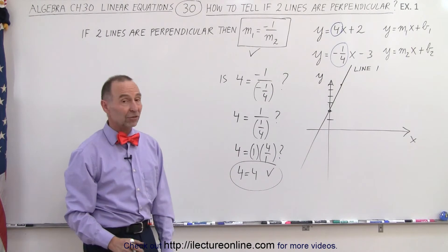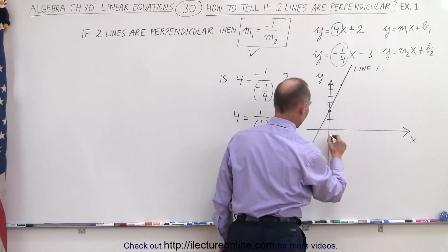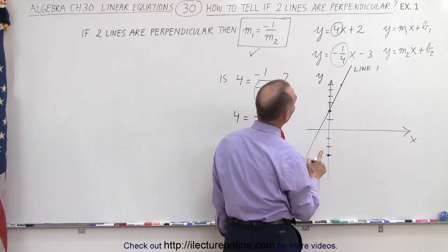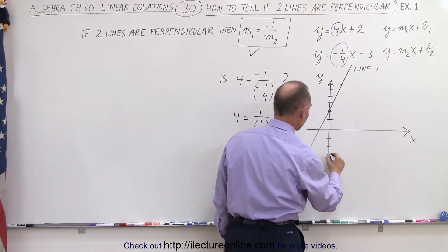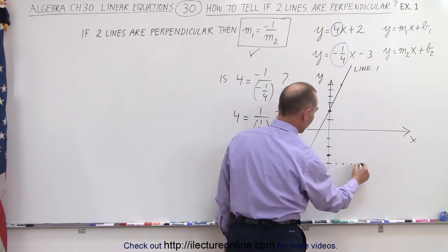Alright, now let's graph the second line. Notice the intercept is minus 3. So 1, 2, 3, there's the intercept. The slope is minus 1/4, so we go down 1 and over 4. So down 1, over 1, 2, 3, 4.